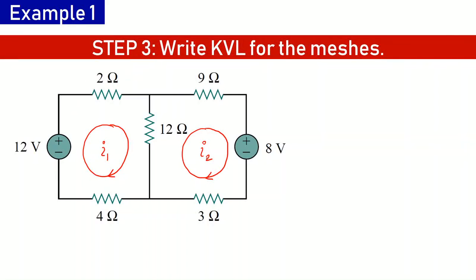We will take rise in potential as negative and fall in potential as positive. For mesh 1, starting from the lower potential terminal of the 12-volt source and moving in a clockwise direction, first we see a rise in potential equal to 12 volts, so we take minus 12. Then there is the 2-ohm resistance — the current through it is i1, along the same direction we are moving, so there is a fall in potential. We take it with a positive sign: the value is 2 ohms and current is i1.